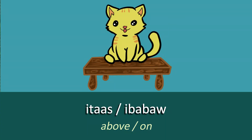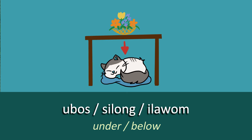Our first word is 'Above' or 'On', which in Besaya is 'Itaas' or 'Ibabaw'. Above or On is Itaas or Ibabaw — you can use them interchangeably. Our next word is 'Under' or 'Below', which in Besaya is 'Ubos', or 'Silong', or you can also use 'Ilawong'. So Under or Below is Ubos, Silong, or alternatively Ilawong.